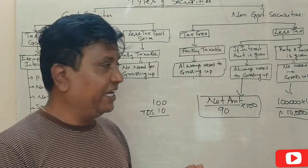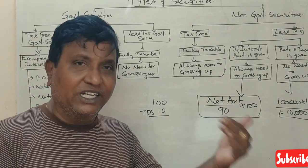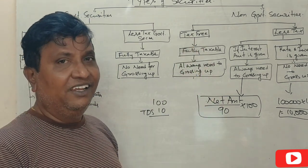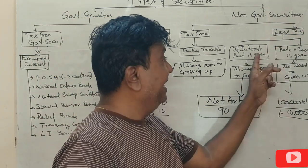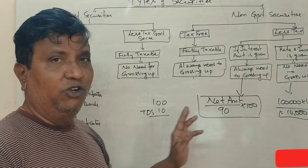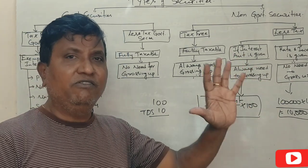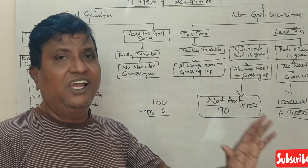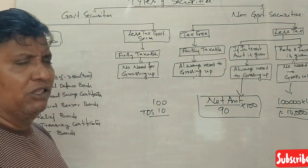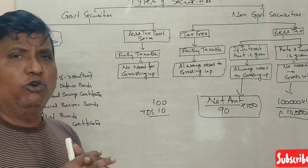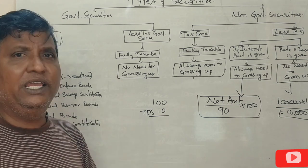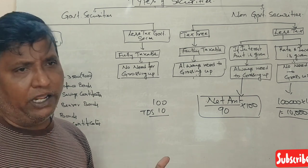These two types of securities — tax-free government securities exemption, all fully taxable 4,000 taxes. Tax-free non-governmental, less tax — these are very important topics for students. Thank you so much.